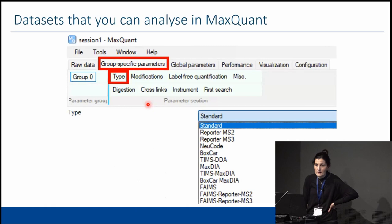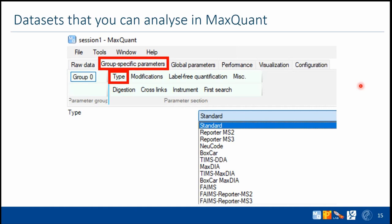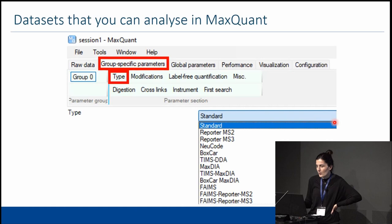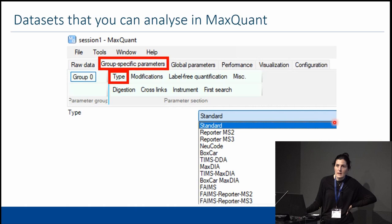In MaxQuant, under Group Specific Parameters and the Type dropdown menu, you can see all the different dataset types you can run: DDA and DIA datasets, MS2-level labeling, MS1 label-free, BoxCar, ion mobility datasets, FAIMS, and astral datasets. Very soon there will be a new version out that can analyze astral datasets if you're fortunate enough to have any.